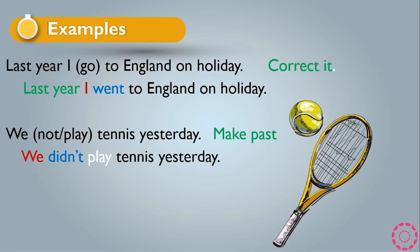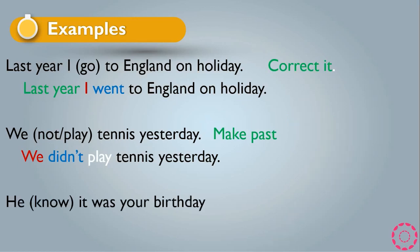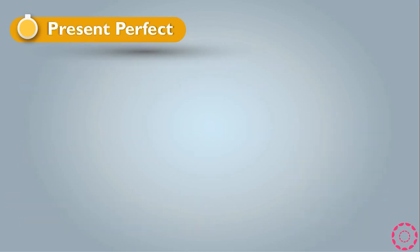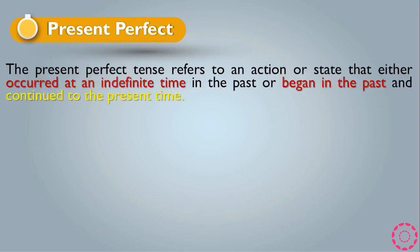Another example: 'He know it was your birthday' — changed to past simple it becomes 'He knew it was your birthday.' Know is an irregular verb and became knew. Now we move on to present perfect.